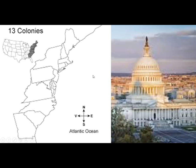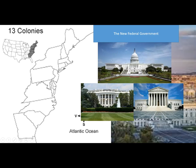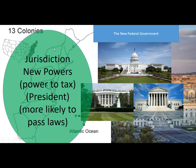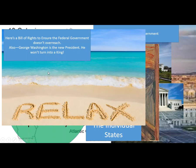They thought that a new government would impose its rights over the states. The new federal government — which includes a bicameral legislative branch, an executive branch, and a judicial branch with jurisdiction over all 13 states — had new powers: powers to tax, and a president more likely to pass laws. The states were freaking out, still nervous about this. The Federalists said, relax — here's a Bill of Rights to ensure that the federal government doesn't overreach. This was the biggest lasting legacy of especially George Mason, the Anti-Federalist. They wanted a Bill of Rights to ensure that the government won't impose anything they don't like. Also, George Washington as the new president won't turn into a king because he was so well-respected.